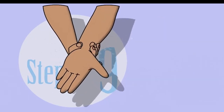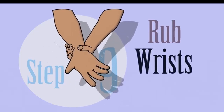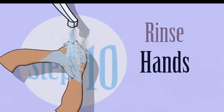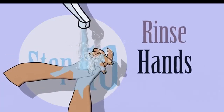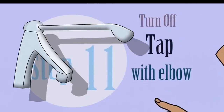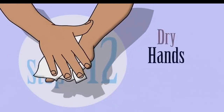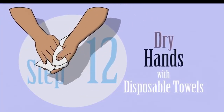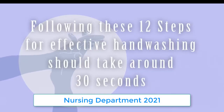Step 9: rub wrists. Step 10: rinse hands. Step 11: turn off the tap with elbow. Step 12: dry hands with disposable towels. Following these 12 steps for effective hand washing should take around 30 seconds.